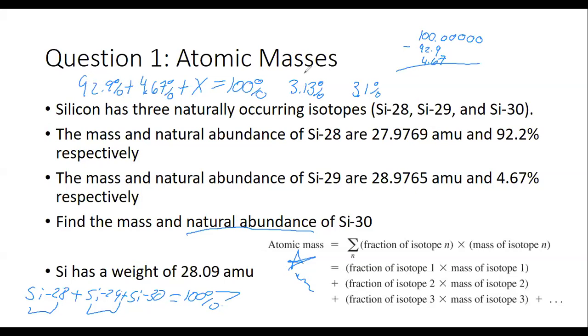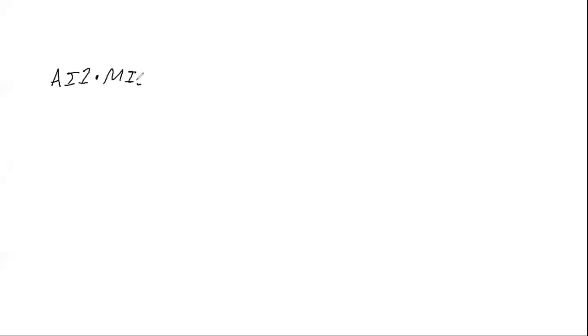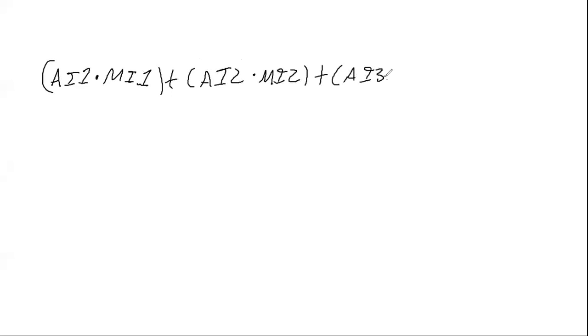I'm going to go to a whiteboard now to give myself a little more space. So I'm going to stop sharing this and share a whiteboard. So our equation is: abundance of isotope 1 multiplied by mass of isotope 1, plus abundance of isotope 2 times mass of isotope 2, plus abundance of isotope 3 times mass of isotope 3. That equals our atomic mass, and the atomic mass given for silicon is 28.09.